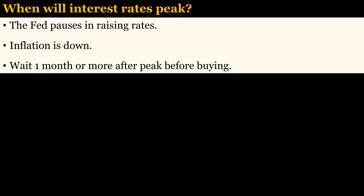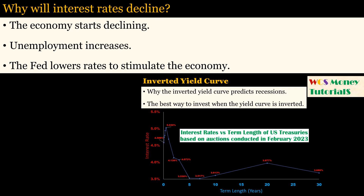The top signs that interest rates are at or near the top are when inflation has decreased to around 2%, and especially if the Fed starts pausing rate hikes. When interest rates peak, do not buy right away — interest rates will stay high for at least a couple of months because it takes time to get feedback from the economy. Demand will often be up when interest rates have just increased, but usually the price will drift downward after many people have already bought. After peaking, why will interest rates decline? Raising interest rates slows the economy, but it takes time for the effects to cascade, so the Fed usually overshoots, causing a recession. Rising interest rates also cause an inverted yield curve and the recession that usually follows it.